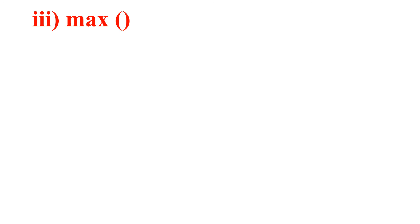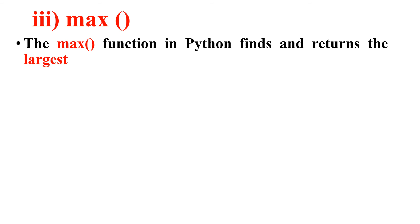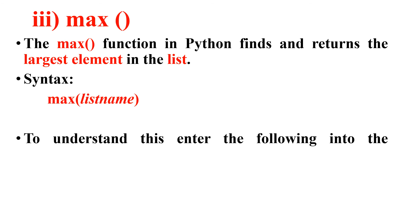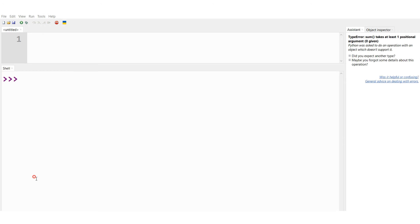Now let me consider the third method — max. The max function in Python finds and returns the largest element in the list. First we define a list with elements, and max returns the largest one. The syntax is max(list_name), where max is the keyword and list_name is the name of the defined list.